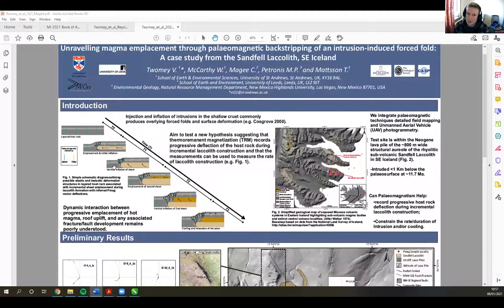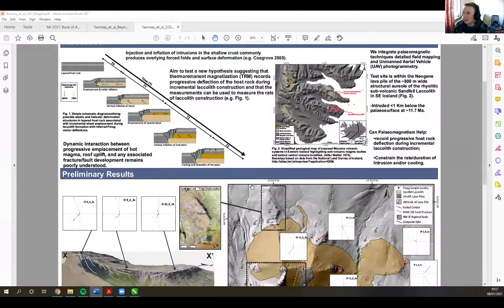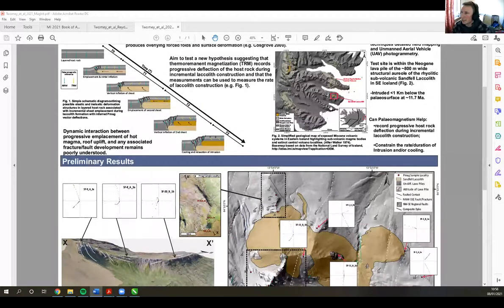So like effectively as the pluton emplaces, the host rock will, the pluton will emplace and inflate. And so the TRM could be expected, the subsequent paleomagnetic vectors could be expected to change over that. So ultimately the goal is, is to see that can the paleomag help record this progressive or even stepwise or punctuated host rock deformation during this incremental laccolith construction. And in turn, can it actually constrain the rate and duration of cooling, particularly in rapidly emplaced bodies in the shallow crust.